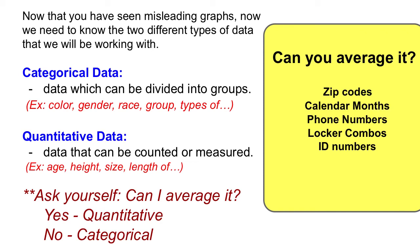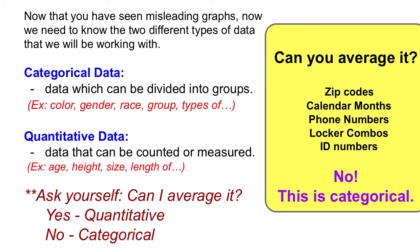Let's look at a couple of examples to see whether they would be categorical data. Your zip code is a number, but does it make sense to take the average of different zip codes? It doesn't really make sense to average that. Calendar months can also be listed as numbers — January as one, February as two — but if you asked people their favorite month and they answered one to twelve, it wouldn't really make sense to average that. Phone numbers are another example of something that appears to be a number but doesn't make sense to average. Same with your locker combination or ID numbers. So even though these things initially appear to be numbers, they are not quantitative data — they're categorical data, because it doesn't make any sense to average any of them.